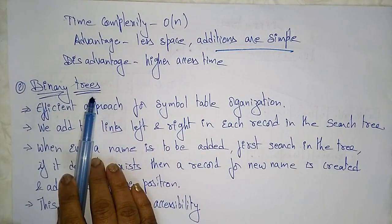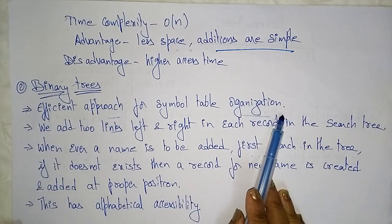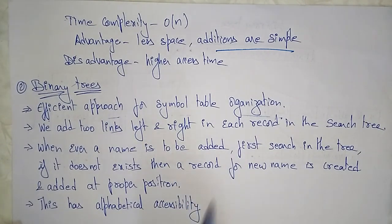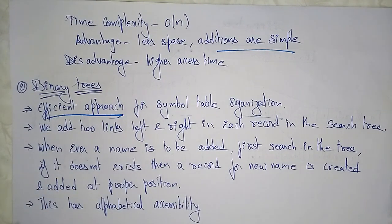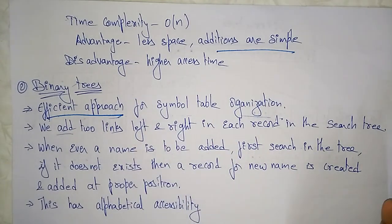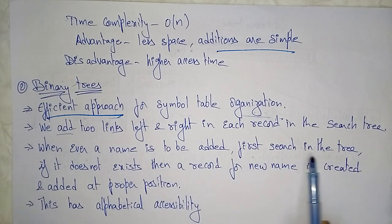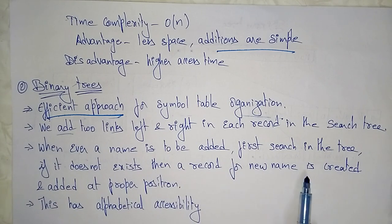The next data structure is the binary tree. The binary tree is an efficient approach for symbol table organization. We add two links — left and right — in each record in the search tree. Whenever a name is to be added, you first search in the tree. If it does not exist, a record for the new name is created and added at the proper position.